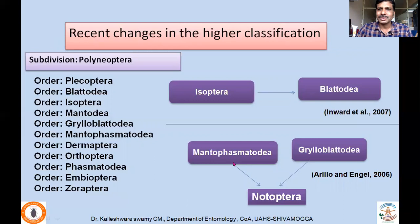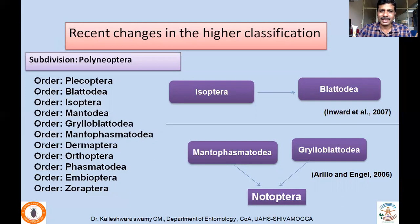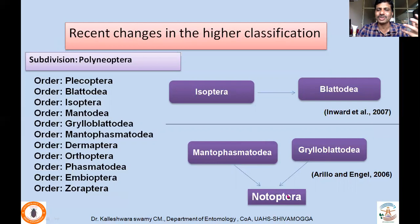Similarly, Mantophasmatodea was considered as a recently erected order — in the year 2002, Klass was the scientist who came out with this new order. For about 6 to 7 years, people were using it as a separate order. But Erika and Beutel merged Mantophasmatodea with the previously existing order Grylloblattodea, and considered Mantophasmatodea and Grylloblattodea as suborders under an order called Notoptera. As a result, Mantophasmatodea and Grylloblattodea also lost the order status.